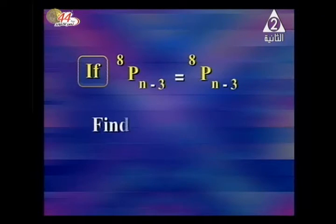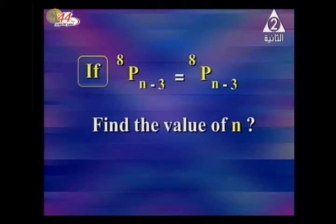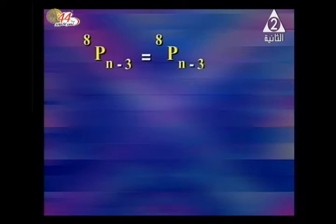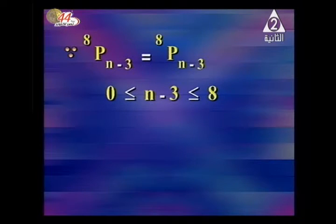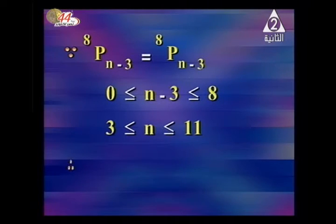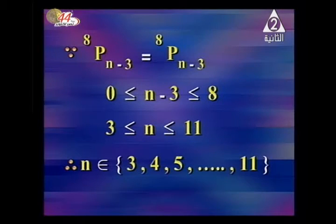Example: 8P(n−3) = 8P(n−3). Find the value of n. From the condition, n−3 must be ≥ 0, so n ≥ 3, and n ≤ 8. Therefore n can take values 3, 4, 5 — giving solutions n = 3, 4, 5, up to 11, with valid values being n = 3, 4, 5.